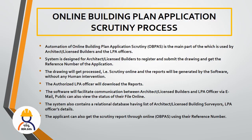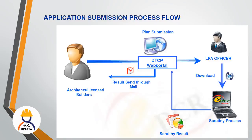After receiving the reference number, the file will be downloaded. Let's review the flow diagram. Here is the flowchart: First, the architect registers on the DTCP website. Then the plan is submitted in DWG format. Then the LP officer downloads the plan and imports it into the scrutiny process in EDCR software.